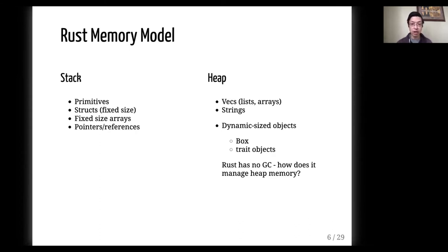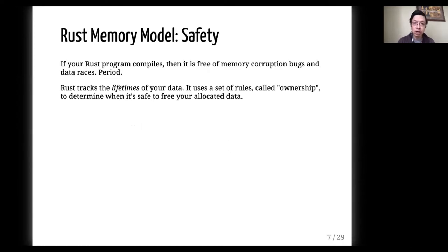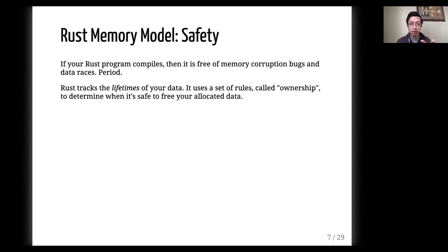Now, one thing is that Rust does not have a garbage collector. So how does it manage memory? This is a really important point, especially for those of you coming from dynamic languages — this is the biggest differentiator about Rust. What Rust promises is that even though it does not have a garbage collector, it will track how your data is used through a concept known as a lifetime. It keeps track of when your data is created, when it is borrowed and used, and it tries to prevent unsafe use and sharing of your data, and it tracks when your data is no longer used, so it knows when to free it.